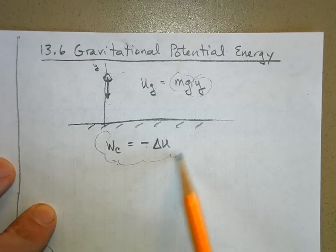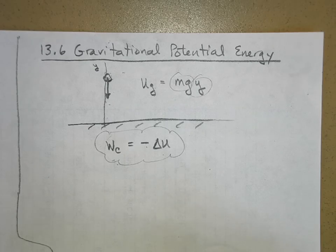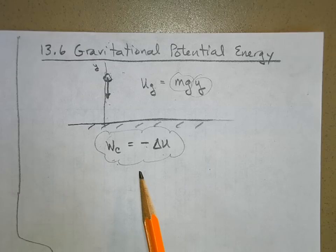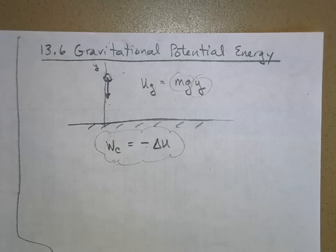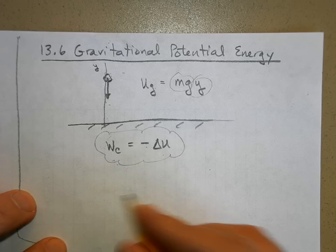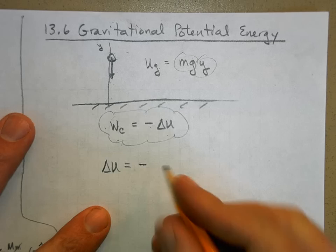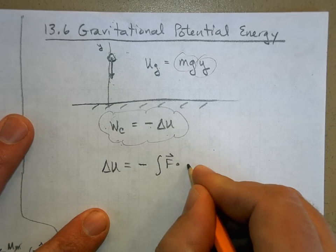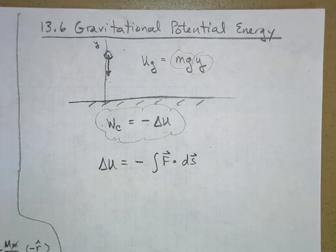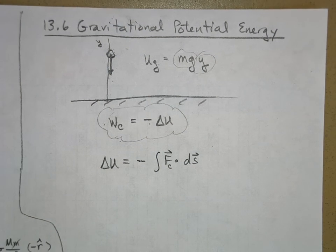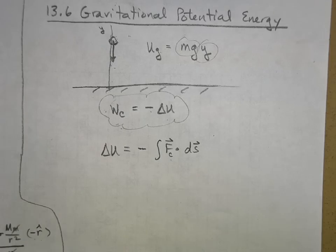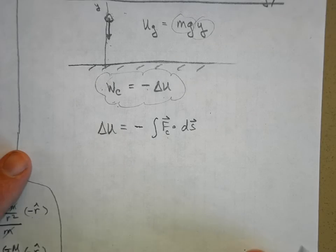Now we're going to extend this idea to a gravity field that varies — like if you go very high, how much have you changed your potential energy? We start with: change in potential energy equals the negative of the conservative force dotted with some displacement along a path. In this case our conservative force is going to be gravity.